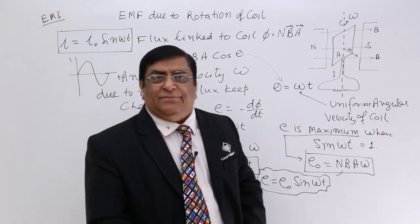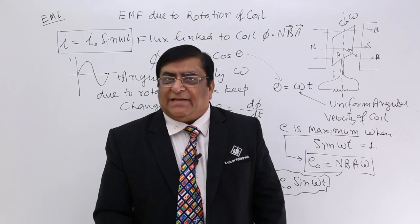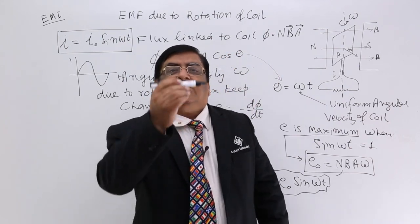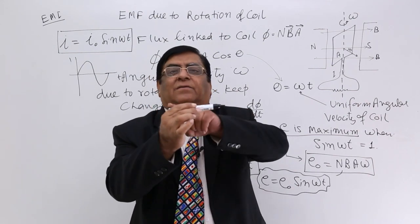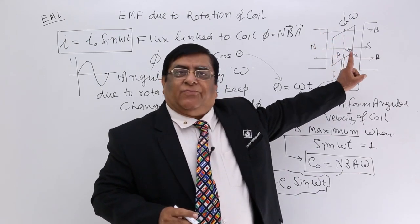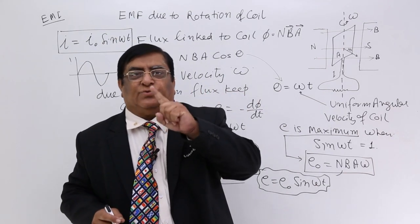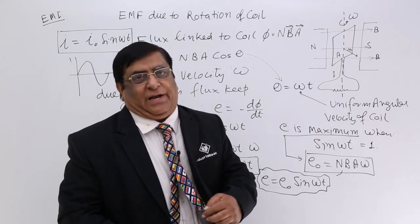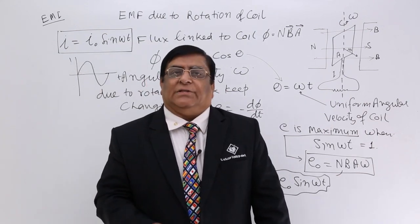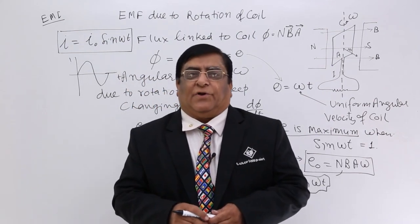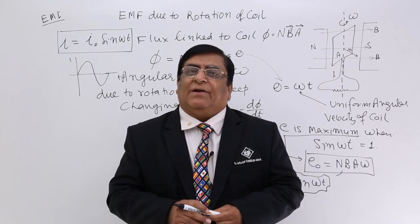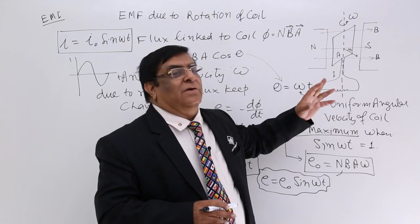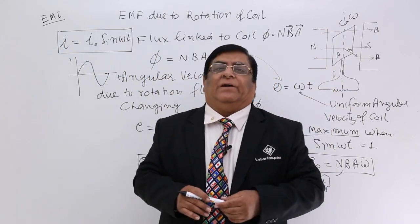Now we have observed that we can get induced EMF by three methods: first, moving a magnet or changing the magnetic flux linked to a coil; second, motional EMF by changing the area; third, rotating the coil and changing the flux to induce an EMF. All three have practical implications in our day-to-day life. In the next topics we will see self-inductance, then mutual inductance, and then how the AC generator works mechanically before switching to alternating current.